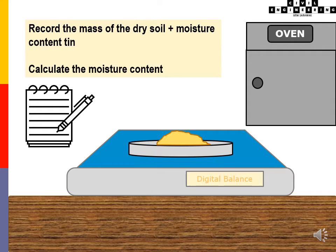Record the mass of the dry soil plus the moisture content tin. After 24 hours of drying, we can calculate the moisture content.